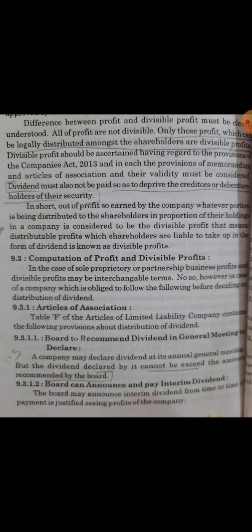First, we are going to discuss provisions mentioned under Article of Association. The first provision states that the Board must recommend dividend in the general meeting for declaration. Under the Article of Association of the company, the Board of Directors should recommend a rate of dividend in the general meeting, and the declaration of this dividend shall be made by the shareholders.